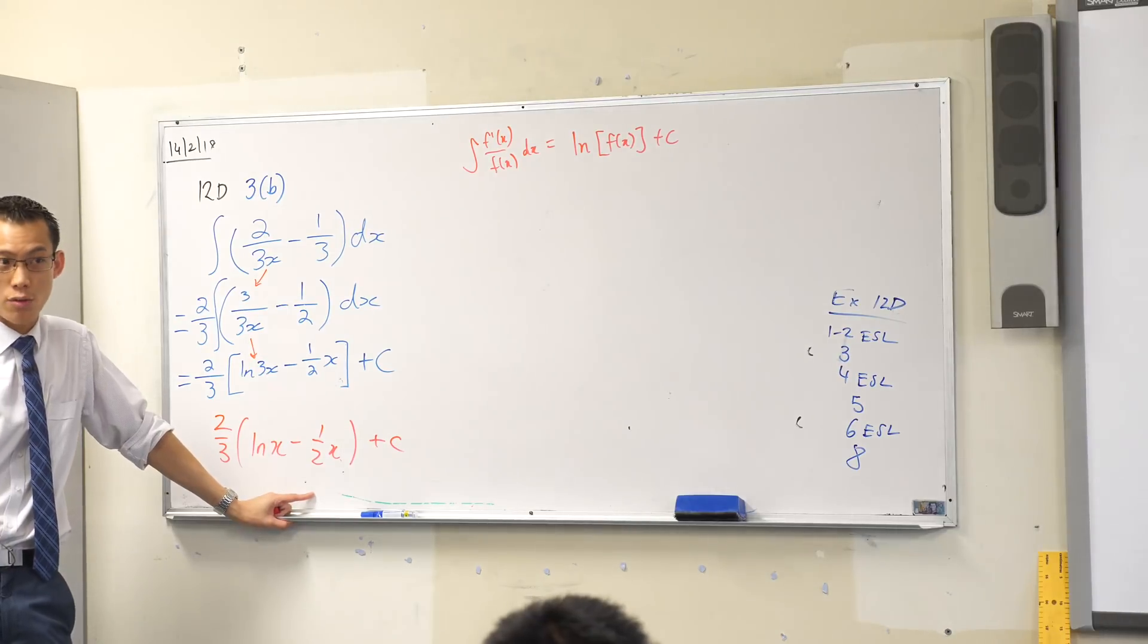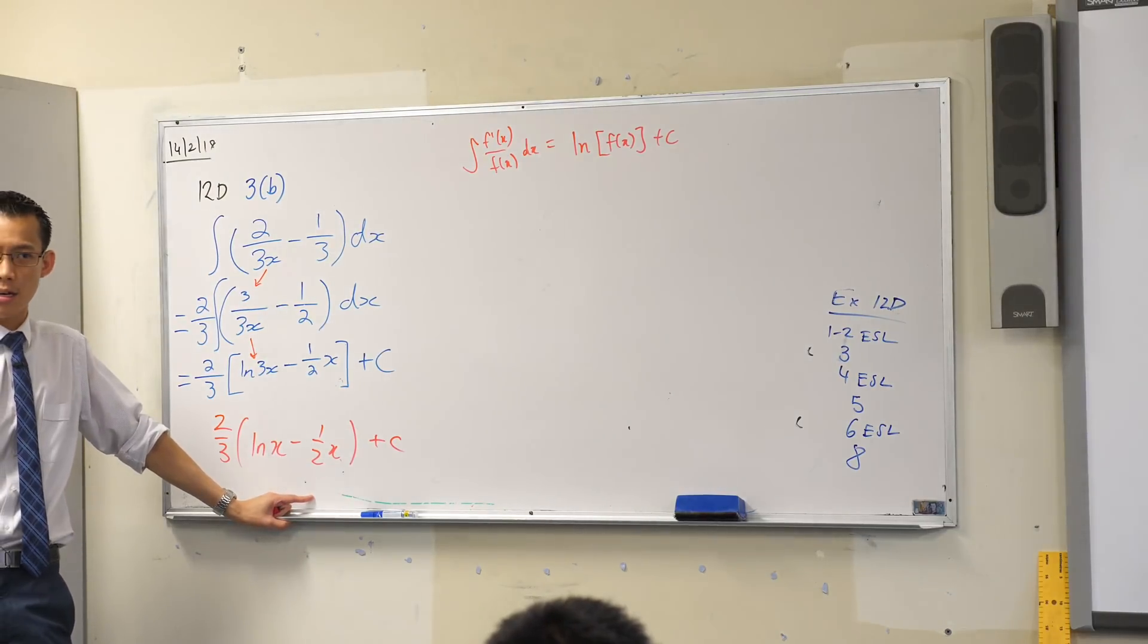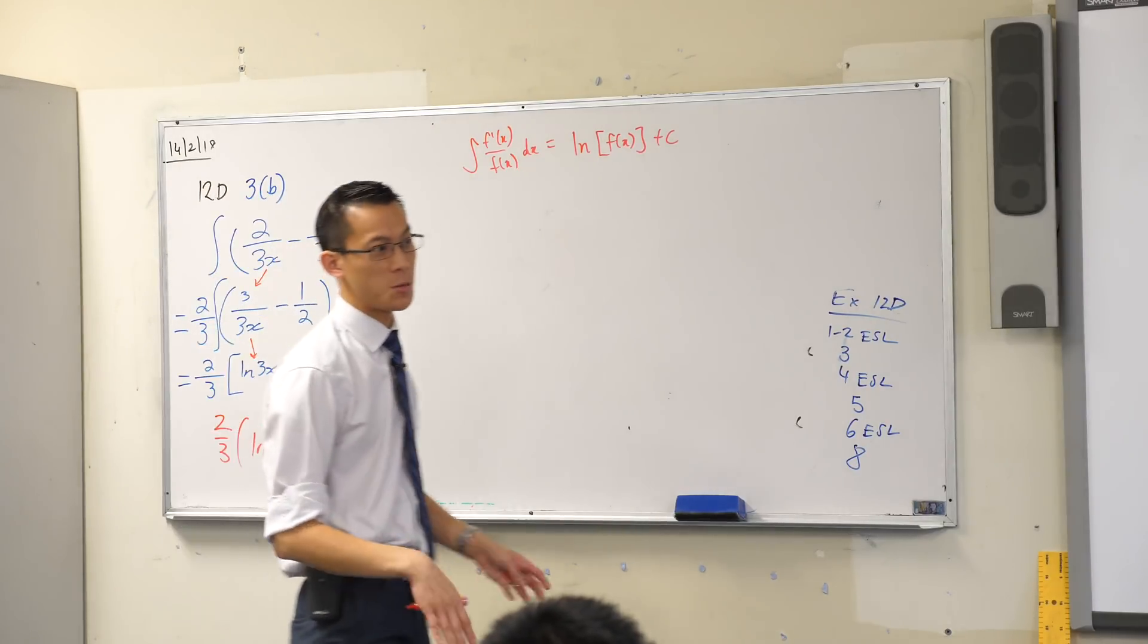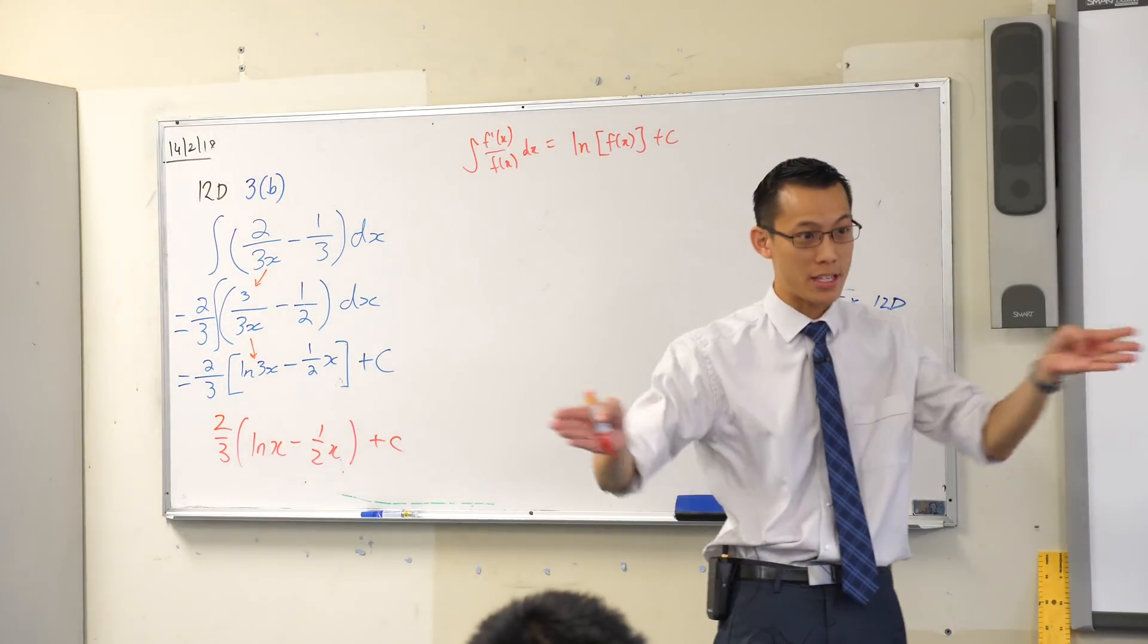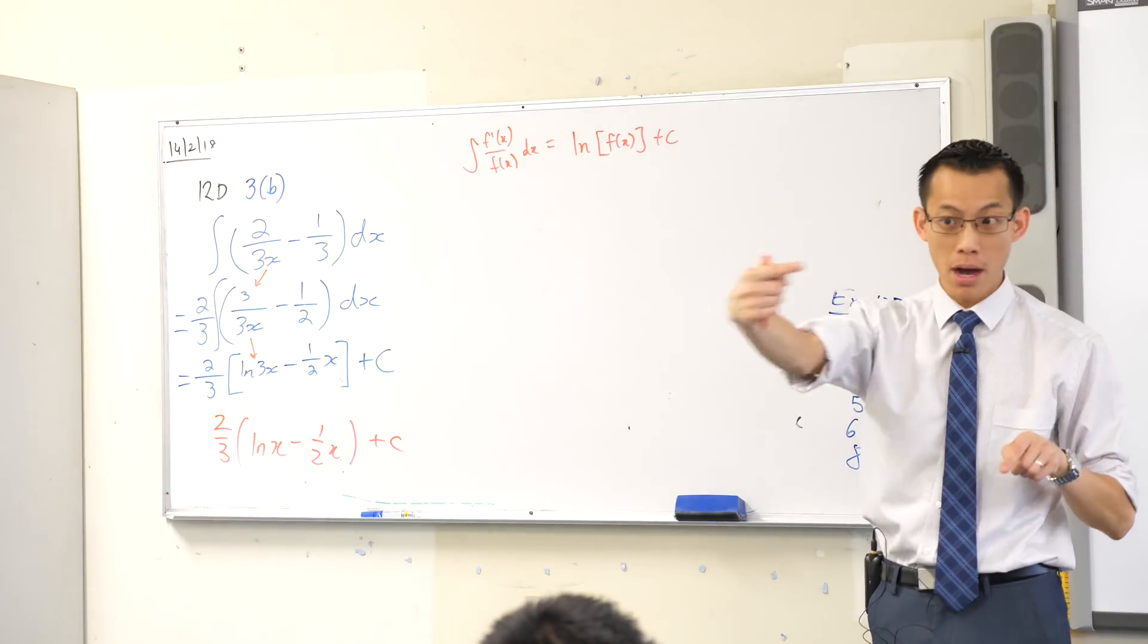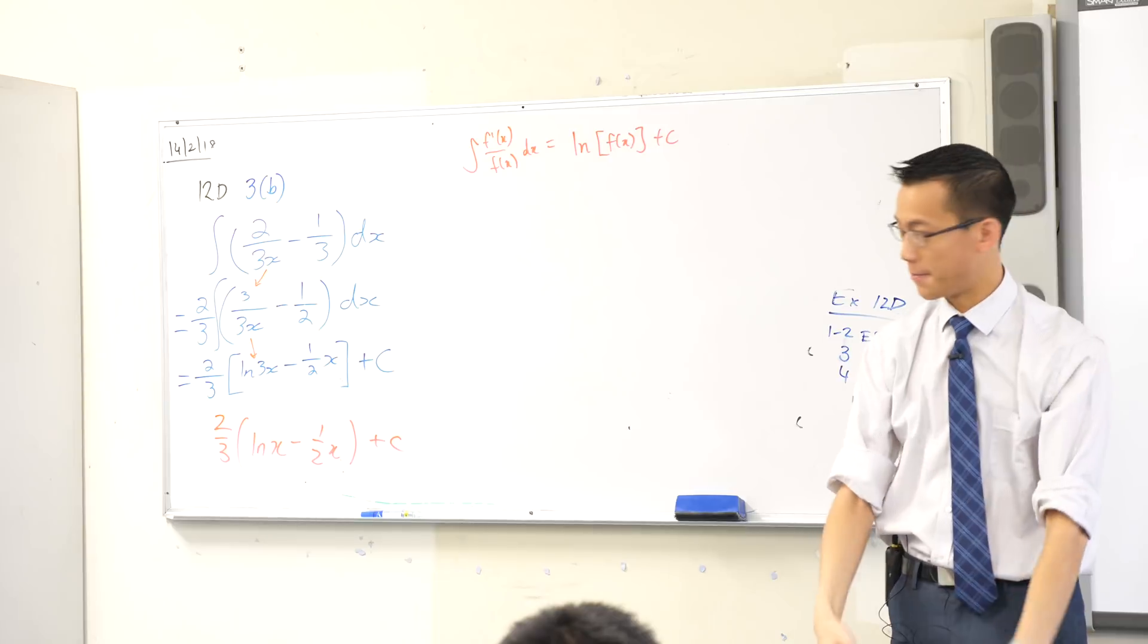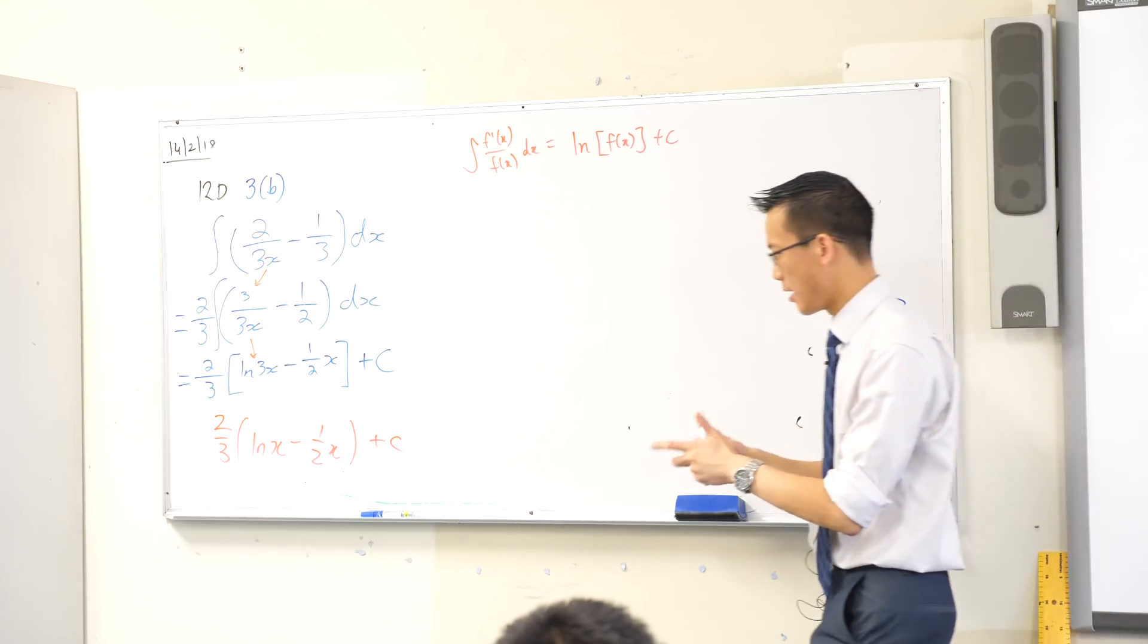So why does the answer disagree? And this is a situation a few of you have come up to, you're like, my answer is not the same as the textbooks. Okay, the root reason why this is, is because in maths there are many ways, many paths to get to the same thing. And sometimes if you take a different path, you may end up with the same answer, but it may look different.